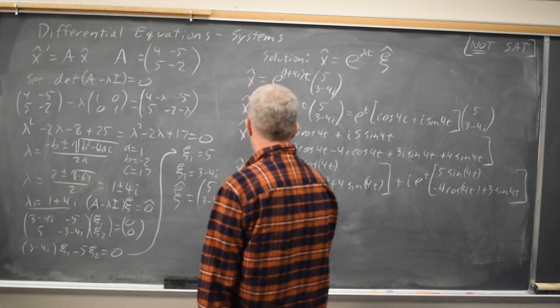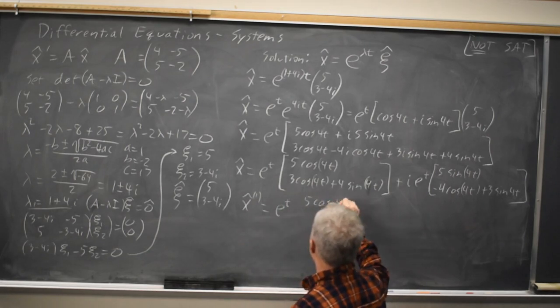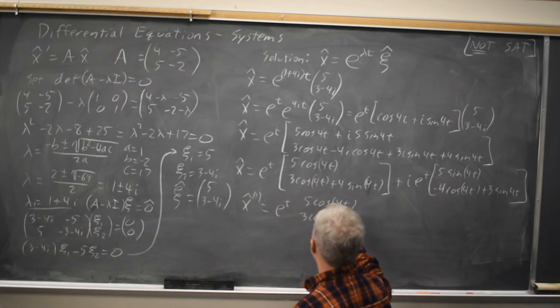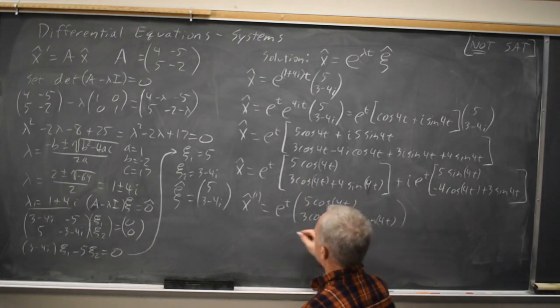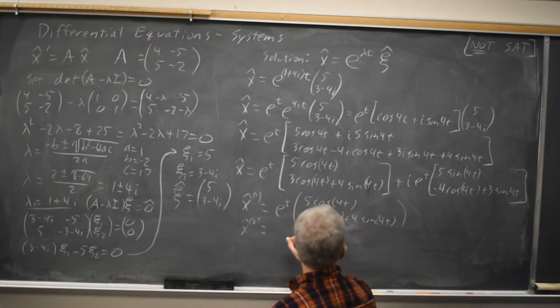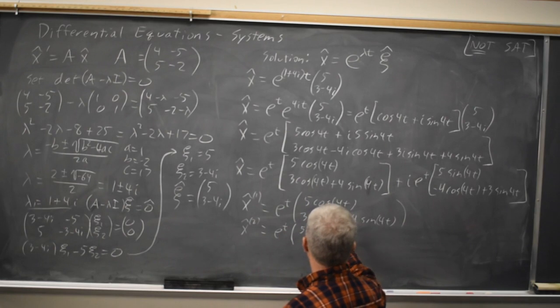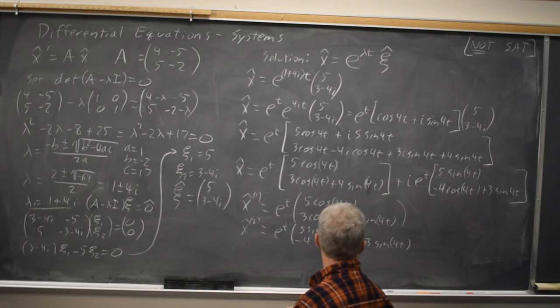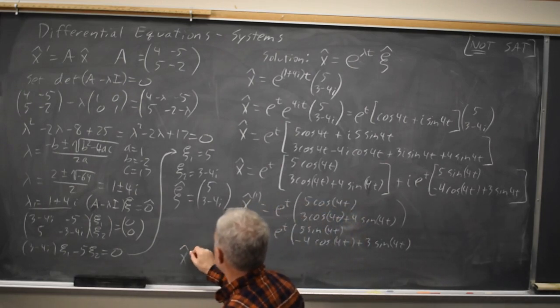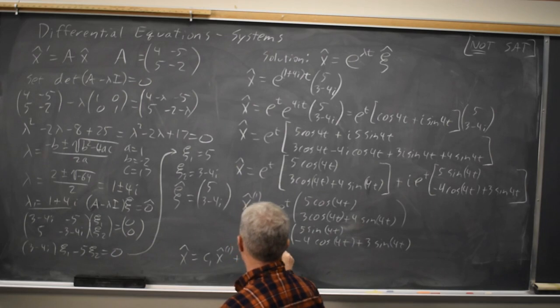So x1 equals just the real part, e to the t, 5 cosine 4t and 3 cosine 4t plus 4 sine 4t is a solution. And x2 equals e to the t, the imaginary part but without the i, 5 sine 4t and negative 4 cosine 4t plus 3 sine 4t is also a solution.